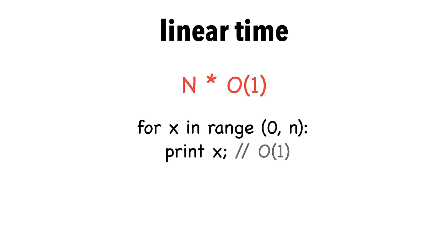Let's look at linear time. Suppose we have the following for loop that prints the numbers 0 to n. We know the print statement is Big O(1). This means the block of code is n times Big O(1), in other words Big O(n).